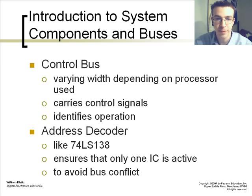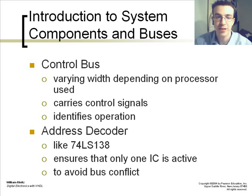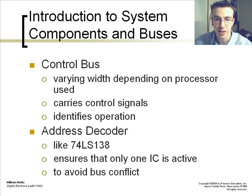The control bus is of varying width depending on the processor used. It carries control signals and identifies the operation the processor wishes to perform. The address decoder, such as a 74LS138, ensures that only one IC is active at a time to avoid bus conflicts.